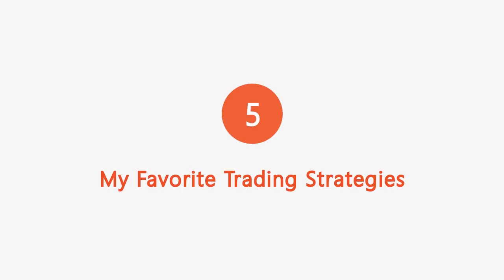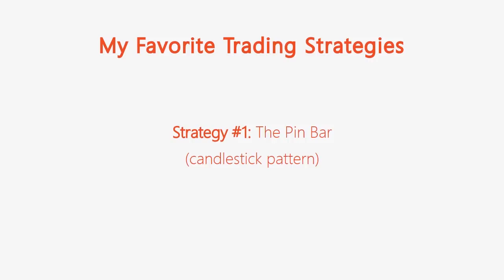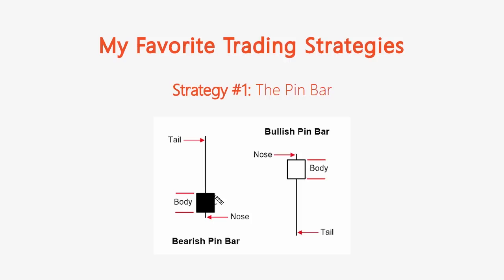Now that we've covered the 10 and 20 EMAs, support and resistance, confluence, and ways to identify trend changes, let's get into my favorite strategies, starting with the pin bar. The pin bar candlestick pattern shows a rejection of support or resistance. It has a tail, a body, and a nose. What makes it effective is that the tail should be two-thirds of the entire range from high to low. The color of the body doesn't matter — what matters is that tail.